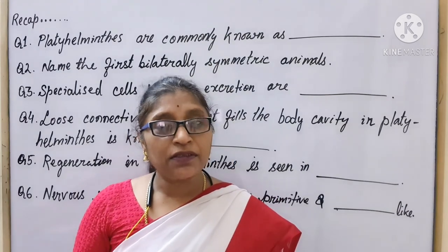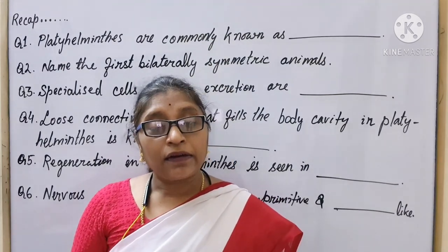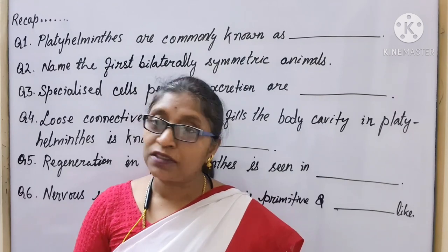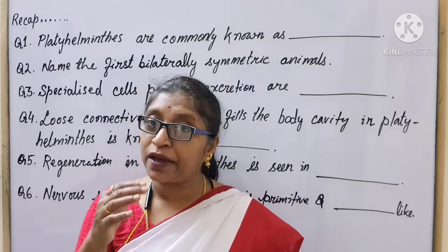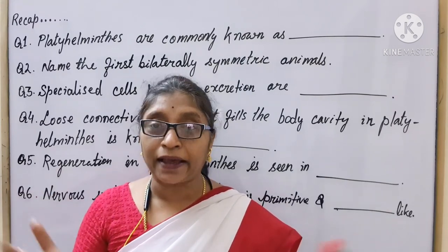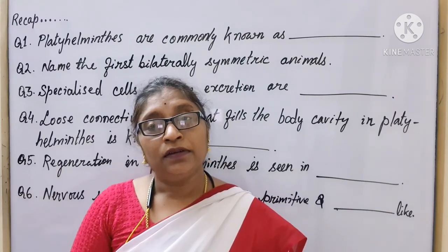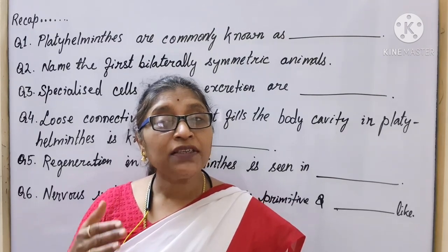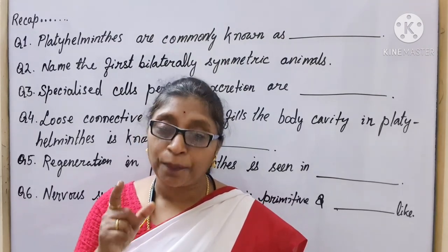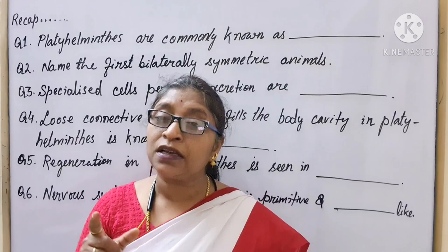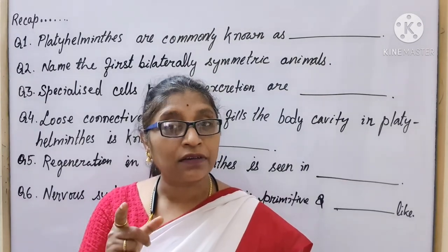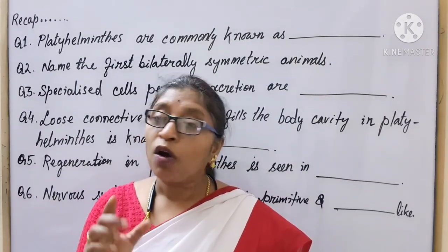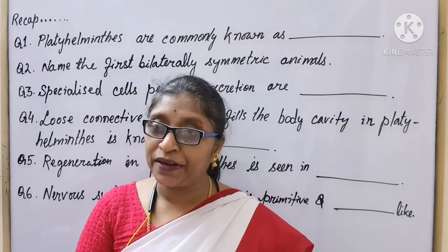These animals respire through their body surface. The nervous system is of primitive, ladder-like type. Specialized excretory cells are present which perform excretion. They are called flame cells or protonephridia.